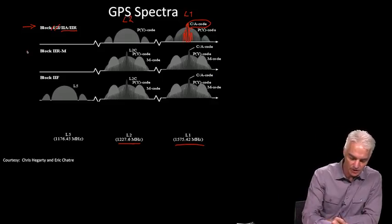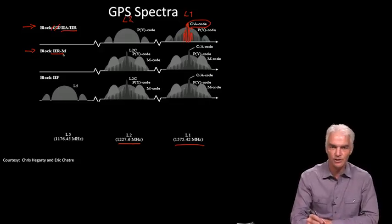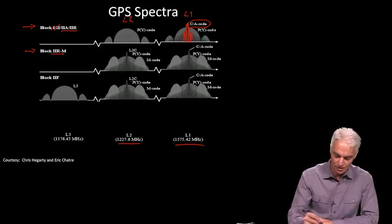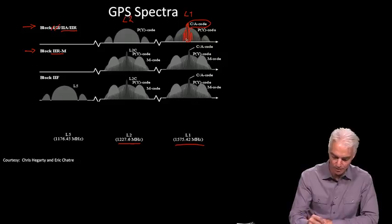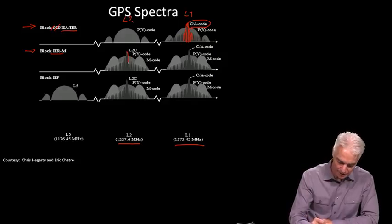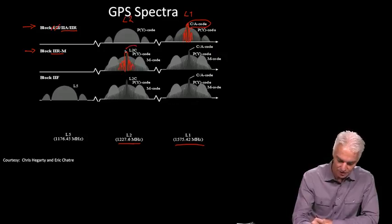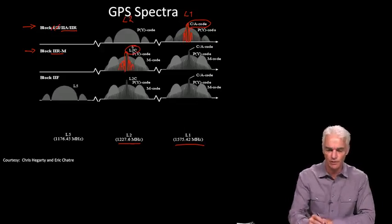Then the next generation satellites, known as 2RM, added an extra signal. And so if you work your way down the slide, you can see what's different. Everything is the same from before except for the added piece, which is, as you can see, it looks like a CA code, and indeed it is like that. And this is L2C, C for civilian.